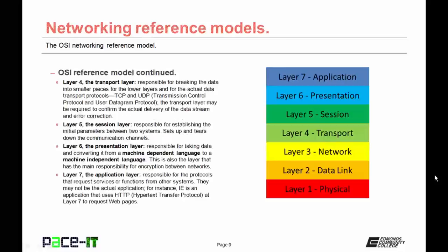Layer four is the transport layer. It is responsible for breaking data into smaller pieces for the lower layers and for the actual data transport protocols, two of which are TCP and UDP. The transport layer may be required to confirm actual delivery of the data stream and to offer error correction, which it does through TCP, or Transmission Control Protocol.